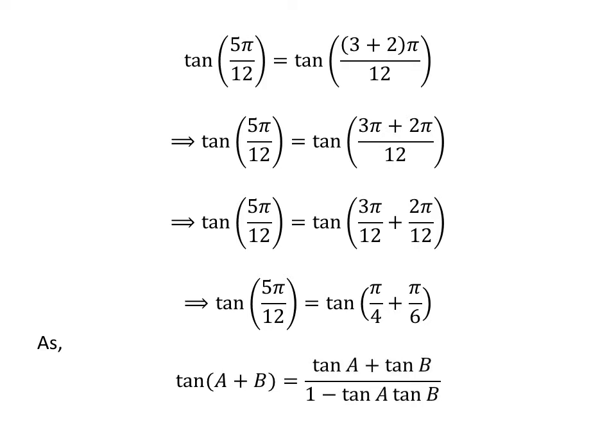We know the famous trigonometry identity: tangent of a plus b is equal to tangent of a plus tangent of b upon 1 minus tangent of a times tangent of b. The card appearing in the upper right corner of this video contains the video explaining the proof of this trigonometry identity. The link of the video is also given in the description section.